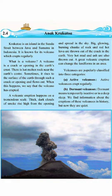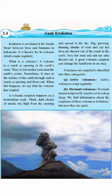Now let us see the types and classification of volcanoes. Volcanoes are popularly classified into three categories. The classification means dividing them into different types. There are three categories of volcanoes: first is active volcanoes, second is dormant volcanoes, and third is extinct volcanoes. Let us see each category one by one.